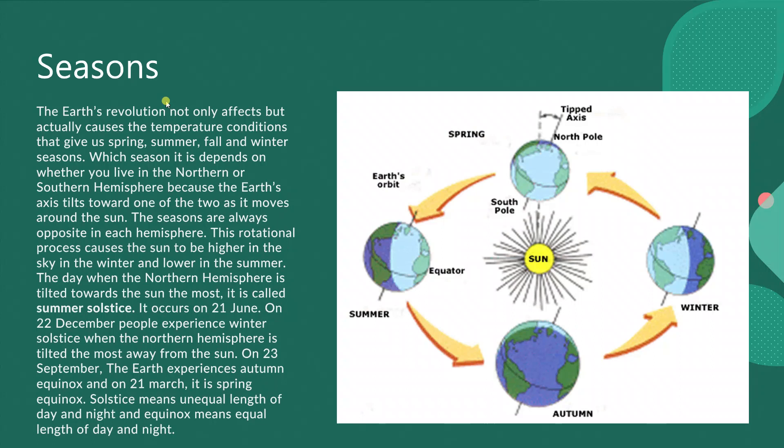The earth's revolution not only affects but actually causes the temperature conditions that give us spring, summer, fall and winter seasons. Which season it is depends on whether you live in the northern or southern hemisphere, because the earth's axis tilts towards one of the two as it moves around the sun.